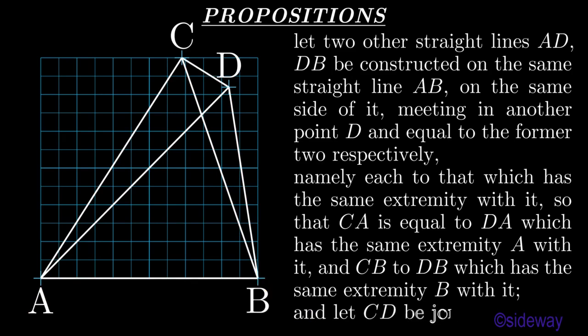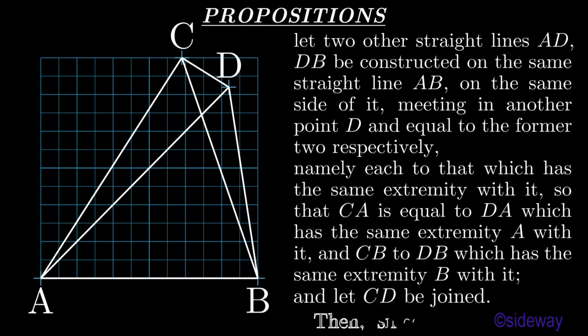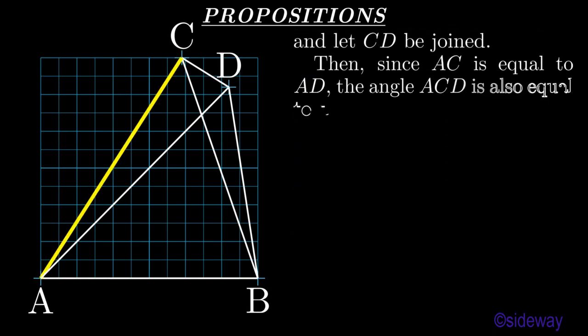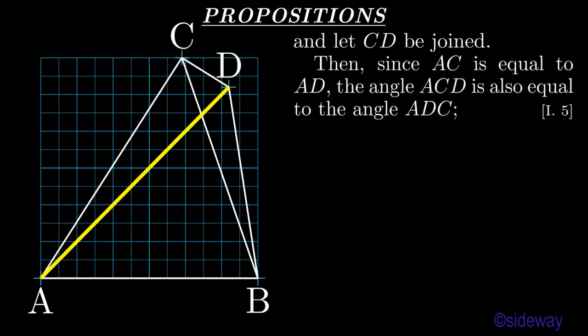Let CD be joined. Then, since AC is equal to AD, the angle ACD is also equal to the angle ADC, by Book 1 Proposition 5.